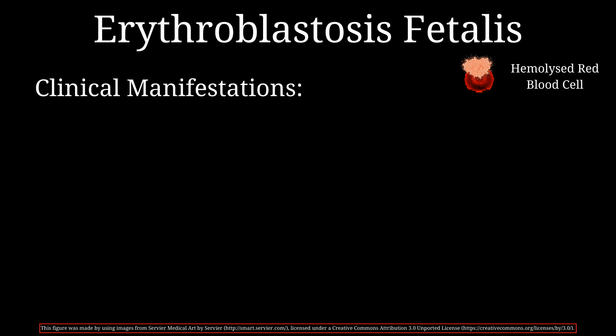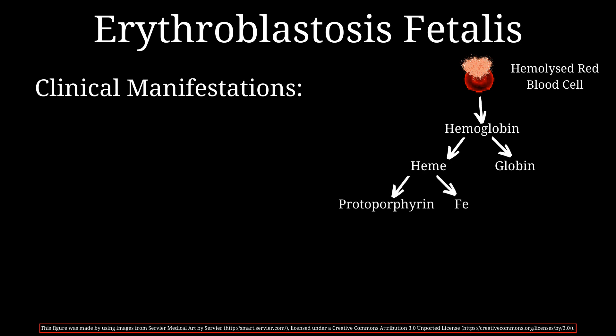Due to hemolysis, hemoglobin molecules contained in the red blood cells are released into the circulation. Hemoglobin then gets converted into heme and globin. Heme is broken down into protoporphyrin and iron, and globin, being a protein, is further broken down into amino acids. Protoporphyrin then gets converted into unconjugated bilirubin, which in turn is conjugated by the liver so it can be excreted by the kidneys.